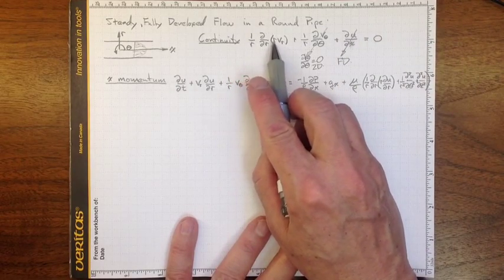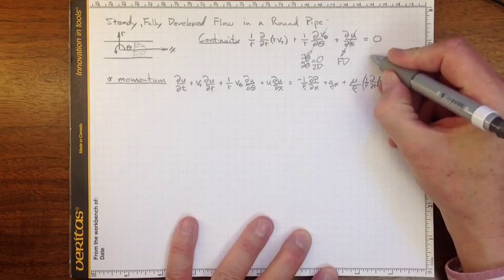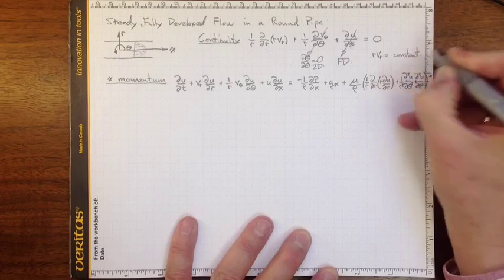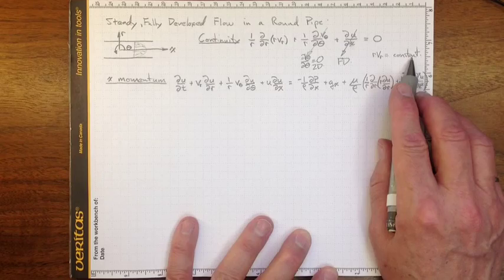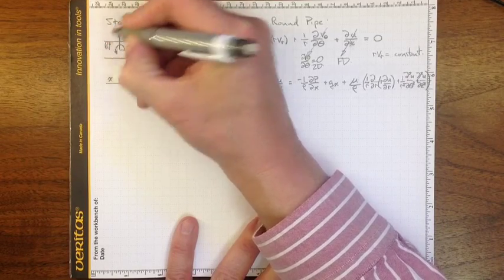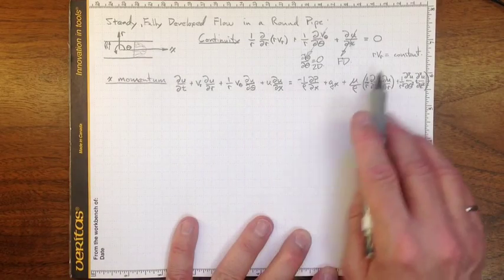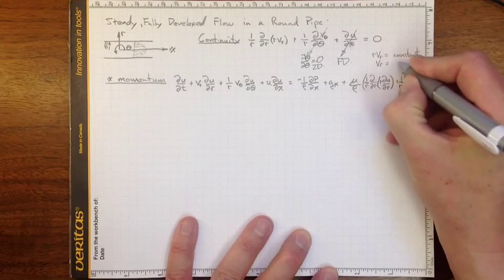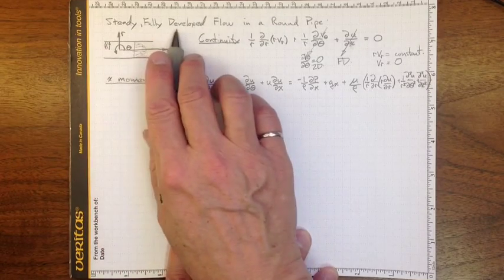We're left with just (1/r) d/dr (r·v_r) = 0. Integrating over the radius gives r·v_r equal to some constant. At r equal to capital R, the radius of the pipe, the velocity is zero — nothing is going out through the pipe wall — so r·v_r must be zero everywhere, meaning v_r equals zero. The only velocity component of consequence is in the x direction for this steady, fully developed flow.